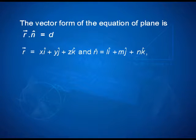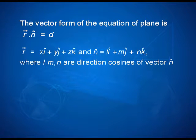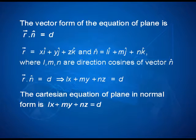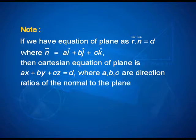Rewriting using vector r as x·i-hat + y·j-hat + z·k-hat and n-hat as l·i-hat + m·j-hat + n·k-hat, where l, m, n are direction cosines of n-hat, this becomes lx + my + nz = d — the Cartesian equation of the plane in normal form. If instead of a unit vector we have a general vector n, the equation r-dot-n = d translates to Ax + By + Cz = d, where A, B, C are the direction ratios of the normal to the plane.